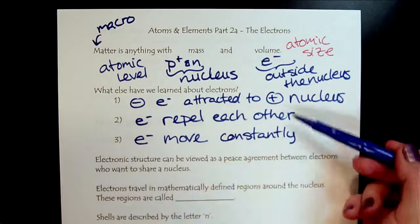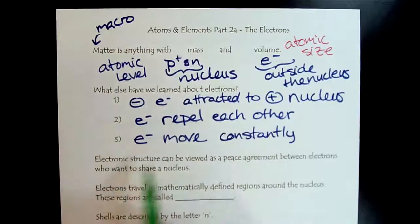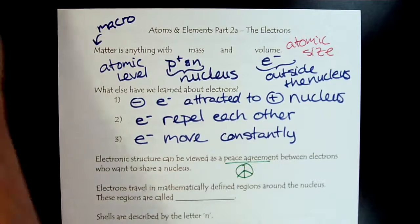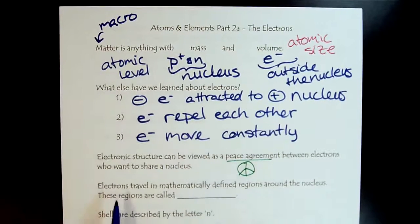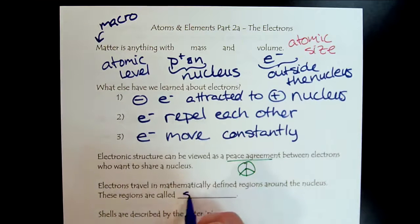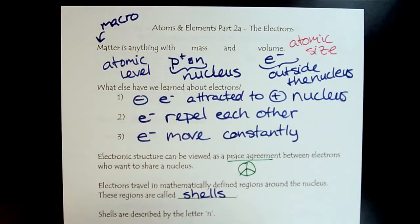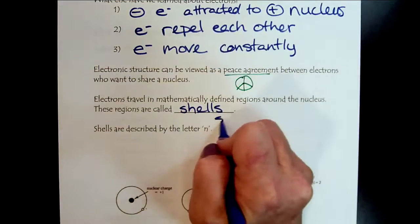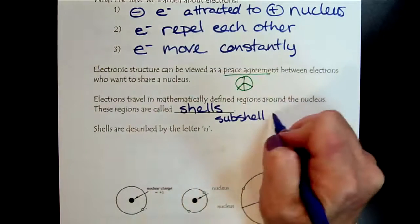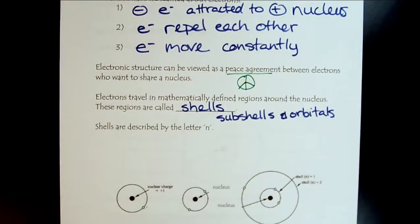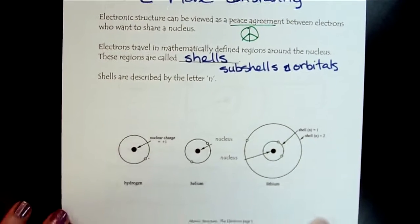So we have this attraction and repulsion. So we can think of electronic structure as basically a peace agreement between the electrons. They want to share the nucleus, so they're willing to hang out with each other. Over time, we've learned that electrons travel mathematically in these defined regions, and there's a lot of calculus and advanced mathematics that goes into that. The good news is we don't really have to worry too much about that. We can focus on the highest order, which is the shells. And so since our goal is biochemistry, the shell model is enough for us.